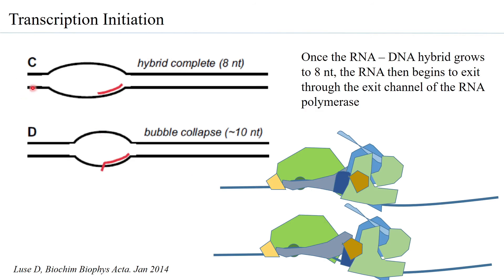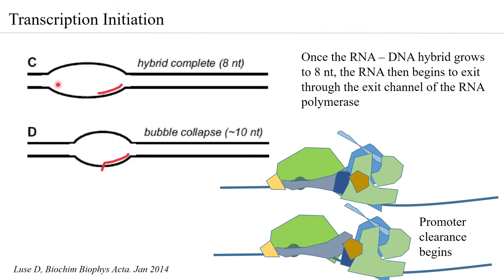As the transcription bubble becomes about 17 to 18 nucleotides long, RNA polymerase 2 along with TF2F and TF2B begin leaving the promoter region — what is called promoter clearance. The upstream part of the DNA which was unbound winds back, so the bubble size which had become 17 to 18 nucleotides will get back to becoming 10 to 12 base pairs long.